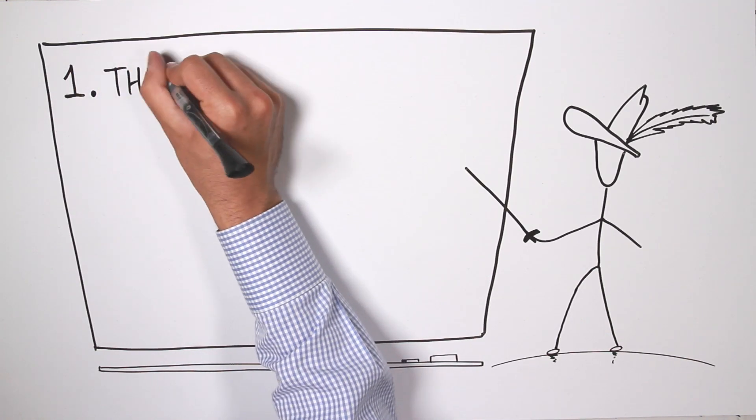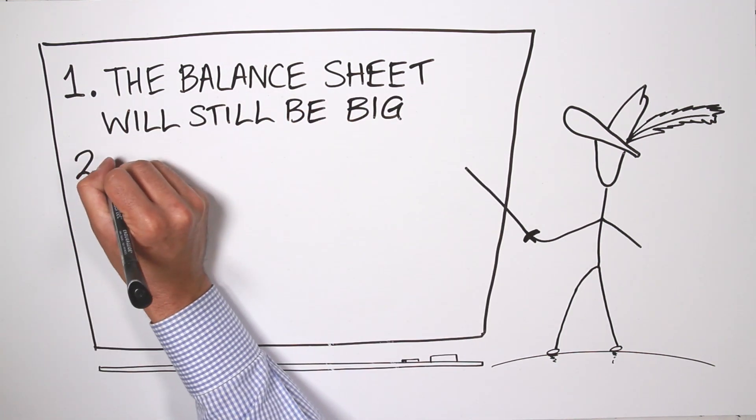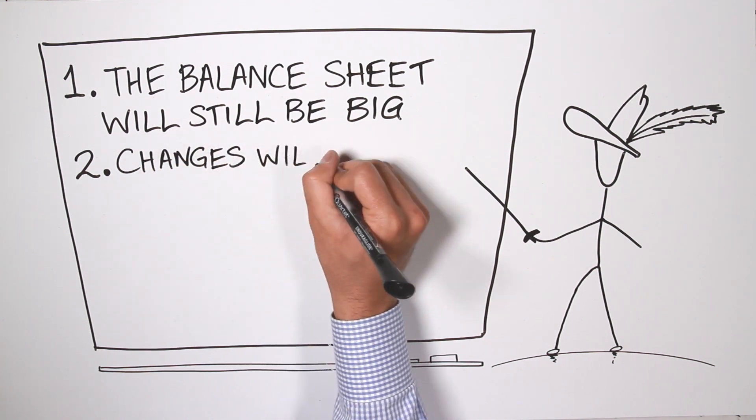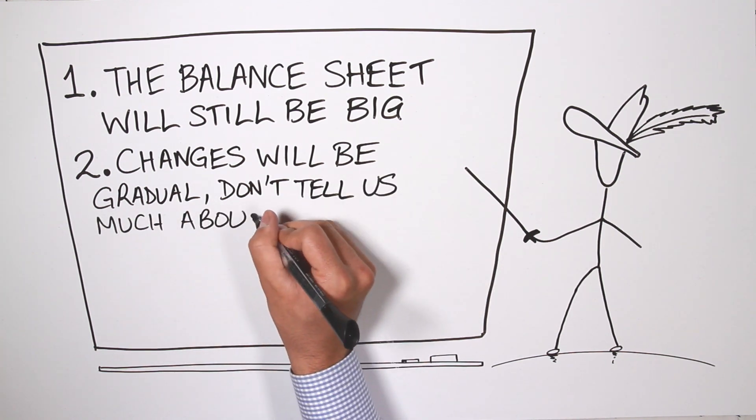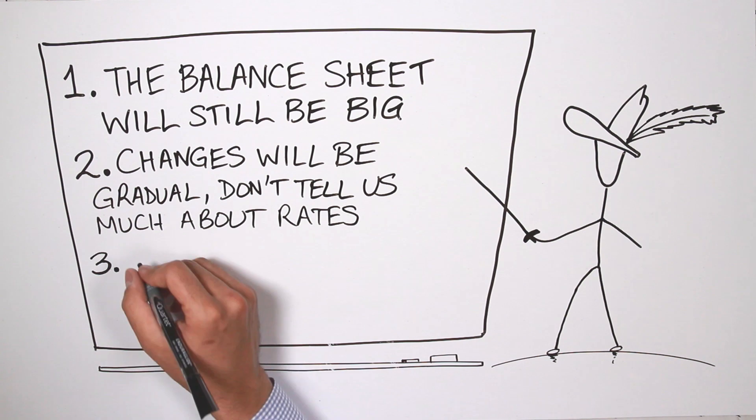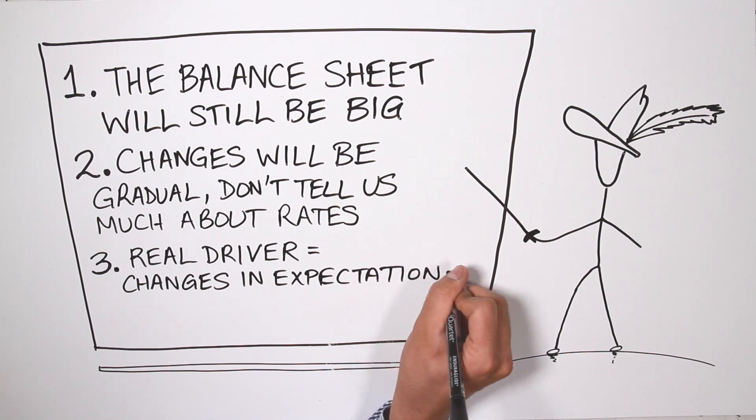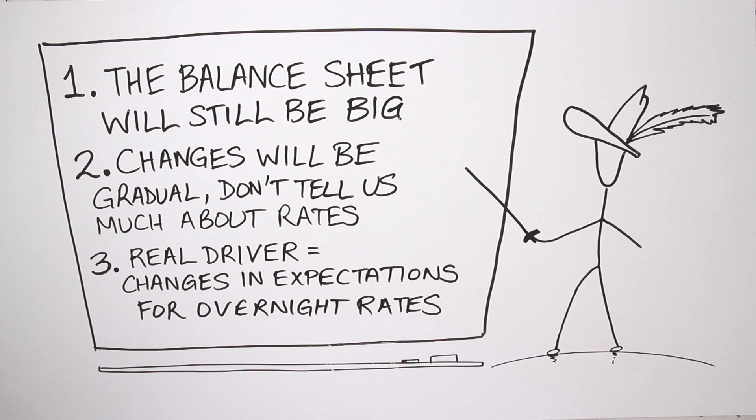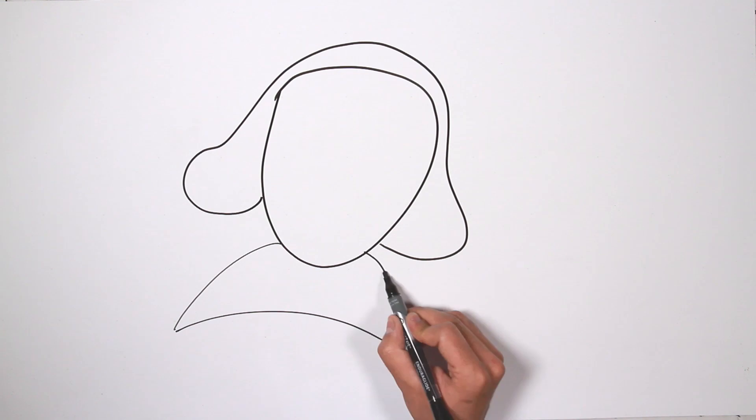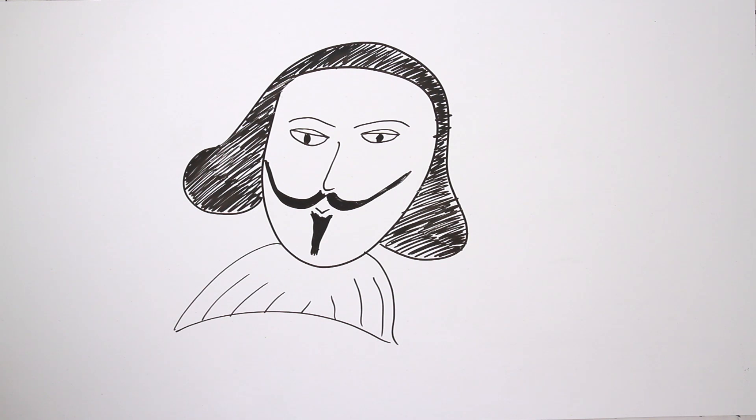So to sum up, first, the Fed's balance sheet will still be a big balance sheet well into next decade. Second, changes in the balance sheet will be gradual and changes in the balance sheet don't tell us much anyway about what will happen to longer term interest rates out over the next year. Third, the real driver of changes in interest rates we think will be changes in expectations for overnight rates. So if the Fed can get to the balance sheet unwind without seeing a dramatic change in expectations for overnight rates, we think the Fed can avoid taper tantrum 2.0. And in the end, the Fed's balance sheet concerns will be much to do about nothing.